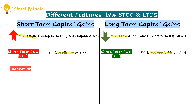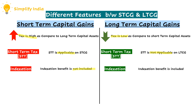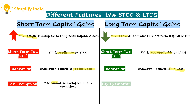Next we have indexation. As the short term capital asset is not held by an assessee for a long period of time, the time value of money is not considered, and hence the indexation benefit is not included. Whereas in case of long term capital gain, the indexation benefit is included. Regarding tax exemption, in case of short term capital gain, tax cannot be exempted under any condition, whereas in case of long term capital gain, tax can be exempted in many cases.